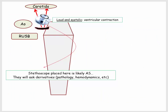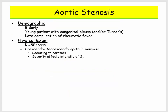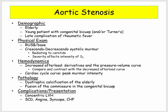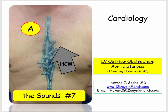To bring it home: a stethoscope placed at the right upper sternal border revealing a loud systolic murmur radiating to the carotids represents the gateway to a variety of derivatives reviewed in this video — including demographic associations, physical exam findings, hemodynamics, pathology, signs and symptoms of critical aortic stenosis, and complications. In the next video, we'll pick up the discussion of hypertrophic cardiomyopathy before concluding with aortic insufficiency. If you have any questions, please contact us at 12 Days in March. Thank you.